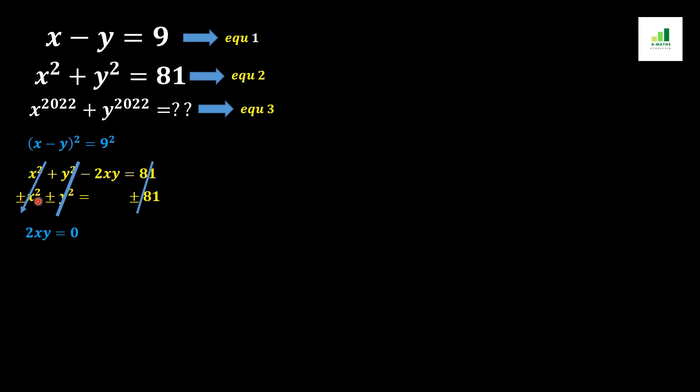From 2xy equals 0, we can write that either x equals 0 or y equals 0. These are our two cases to investigate.